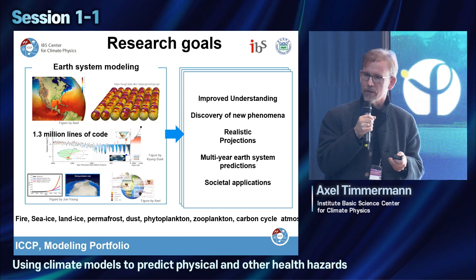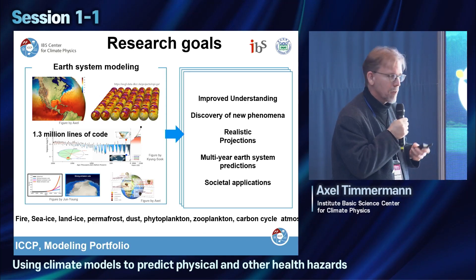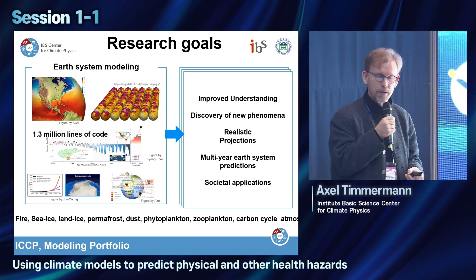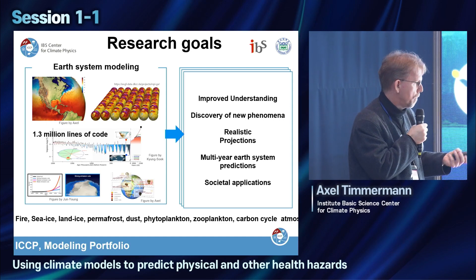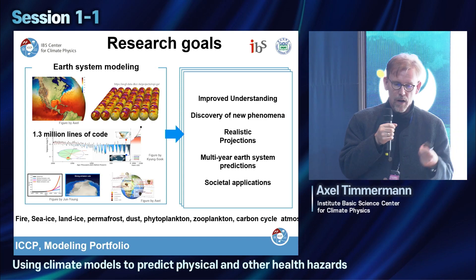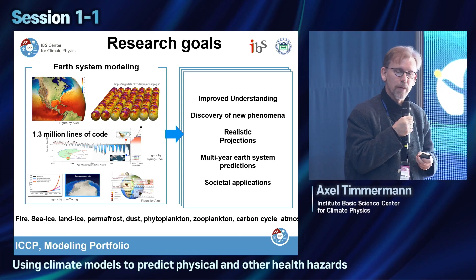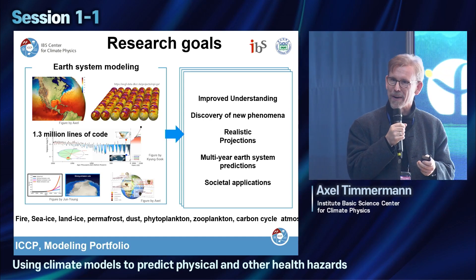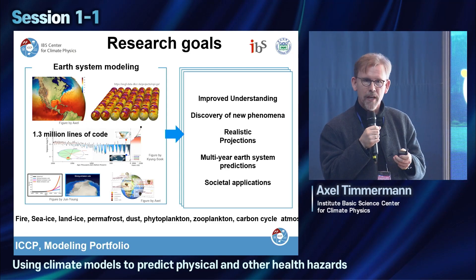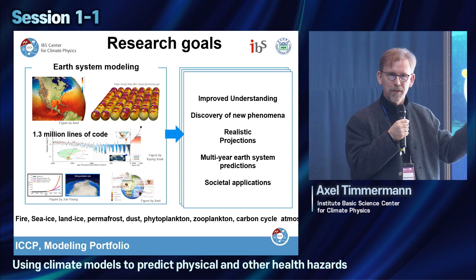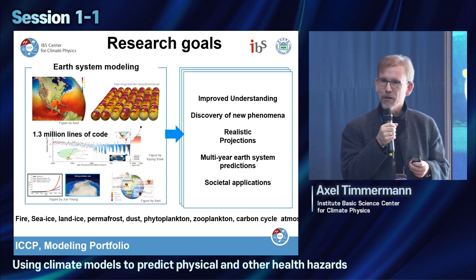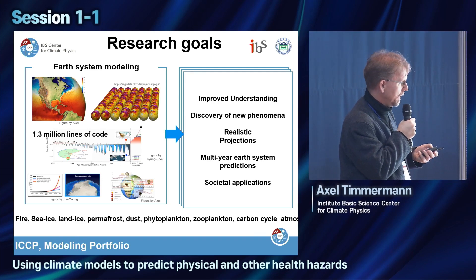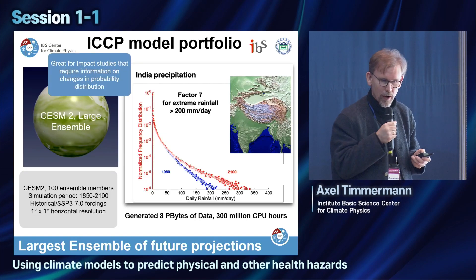We also develop societal applications in our center. If we think about an Earth system model, it includes the atmosphere, ocean, sea ice, land ice, fire, permafrost, dust, phytoplankton, zooplankton, carbon cycle, atmospheric chemistry, and recently we also introduced mammals. So a climate model is very comprehensive. Keep in mind that we are not just simulating temperature — I can tell you how zooplankton will change in the East Sea of Korea in the year 2150.